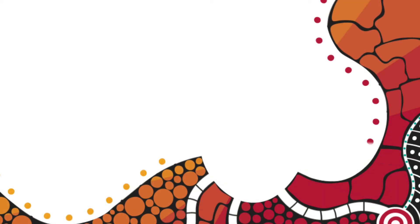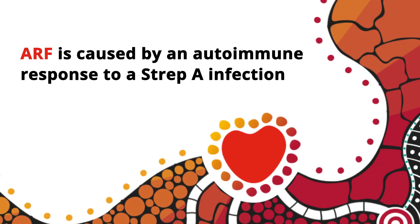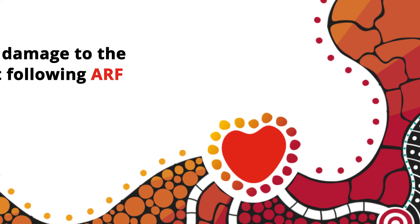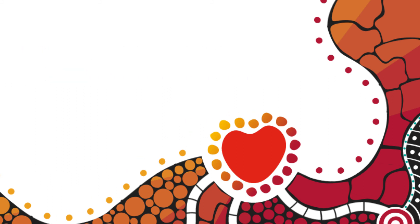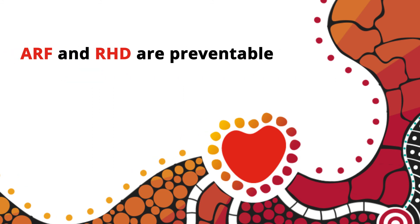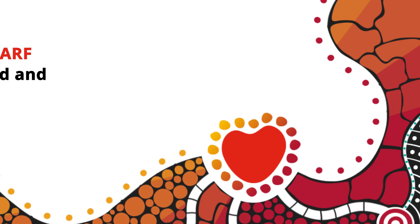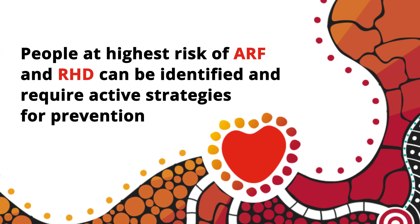In summary: ARF is caused by an immune response to a strep A infection. RHD is permanent damage to the heart valves following acute rheumatic fever. ARF and RHD are preventable. People at highest risk of acute rheumatic fever and rheumatic heart disease can be identified and require active strategies for prevention.